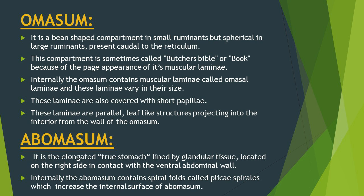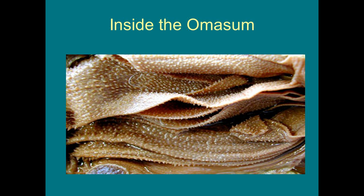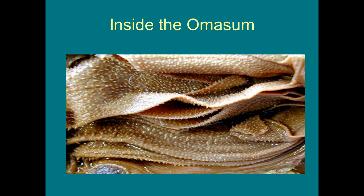The third compartment is the omasum, which is bean-shaped in small ruminants but spherical in large ruminants. It is present caudal to the reticulum and lies on the medial plane. Internally, the omasum contains muscular laminae called omasal laminae, covered with short papillae. These muscular laminae vary in size and are parallel leaf-like structures projecting into the interior of the omasum. Because of their page-like appearance, the other name for omasum is butcher's bible or book.